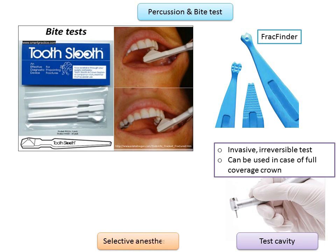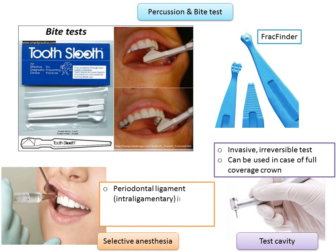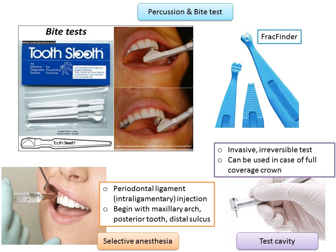For selective anesthesia, if the patient cannot determine which arch the pain is coming from, the clinician should first selectively anesthetize the maxillary arch using a periodontal ligament intraligamentary injection. The injection is administered to the most posterior tooth in the suspected quadrant starting from the distal sulcus, and anesthesia is subsequently administered in an anterior direction one tooth at a time until the pain is eliminated. If the pain is not eliminated after an appropriate period of time, the procedure is repeated for the mandibular teeth. Selective anesthesia can be used when the patient cannot specify whether symptoms are emanating from the maxillary or mandibular arch.